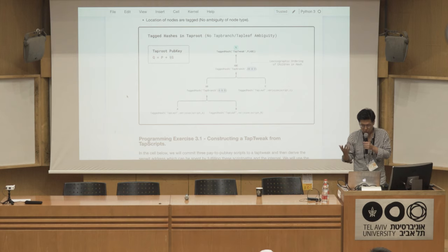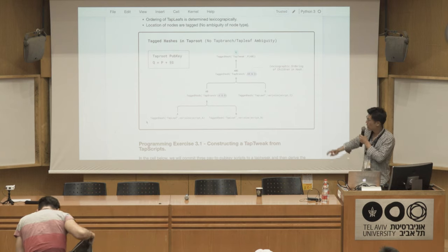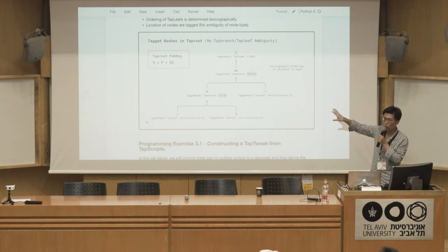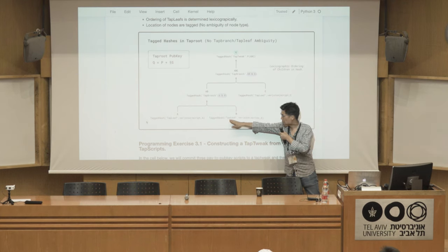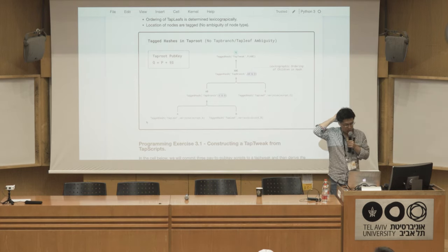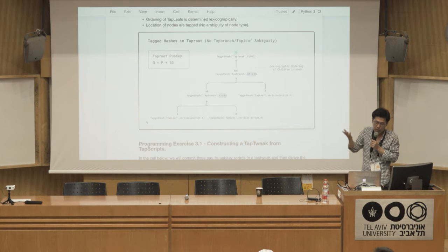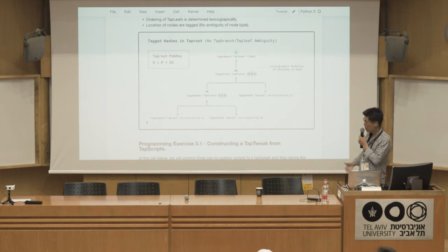The Merkle tree structures are described here in more detail. One key takeaway is that the nodes are tagged: leaf nodes have 'tap_leaf' inside the hash expression, and internal nodes have 'tap_branch'. This removes the ambiguity between internal and leaf nodes. In the Bitcoin Core header Merkle tree model, that ambiguity is actually an attack vector — and this is solved with Taproot.